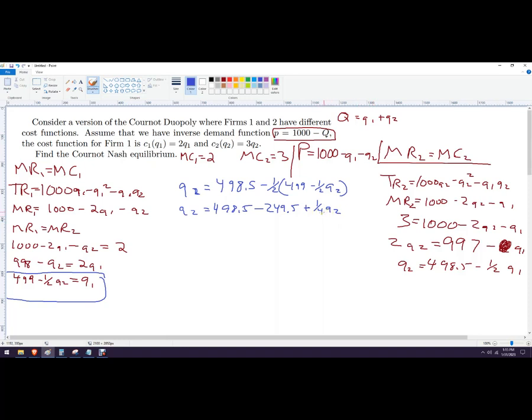249.5 minus, nope, minus and a minus is a plus on 0.25 Q2. We're going to send that guy over there. So now this becomes 0.75 Q2. And then this and this is 249 again. We're going to divide both sides by 0.75. So 249 divided by 0.75 is 332.